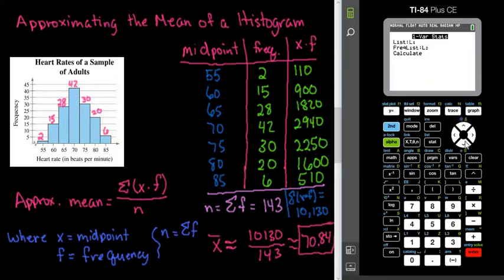Remember that our midpoint, or our list, was L1. Our frequency list was L2. And if we hit Calculate, 70.839 or 70.84 is what we got for the average mean.